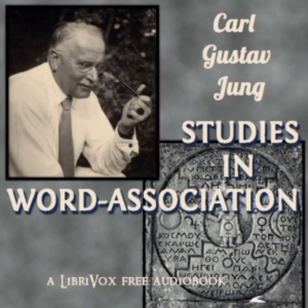Associations denoting place, time, means, and purpose stand in somewhat close connection with the group of predicates. Ronschberg's association denoting purpose: place-to go, into town; time-eat, noon; means-to hit, with the stick; purpose-wood, for burning. Occasionally, doubt arises in these reactions as to whether they are perhaps to be conceived as specific and belonging, therefore, to the subordination group. The differentiation is easy in the great majority of cases, and no gross error will arise. Definitions or explanations of the stimulus word, which on the whole occur very seldom, have a certain connection with the above groups. We have, therefore, included them among the predicative relationships. Examples: doors-noun; blue-adjective; star-heavenly constellation.